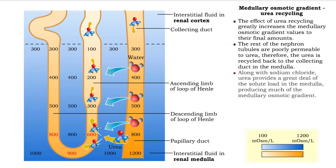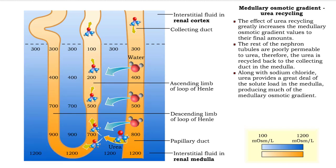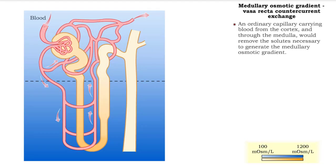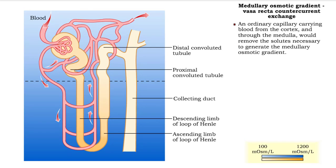This causes the urea to be recycled back to the collecting duct in the medulla. Along with sodium chloride, urea provides a great deal of the solute load in the medulla, producing much of the medullary osmotic gradient. An ordinary capillary carrying blood from the cortex and through the medulla would remove the solutes necessary to generate the medullary osmotic gradient.